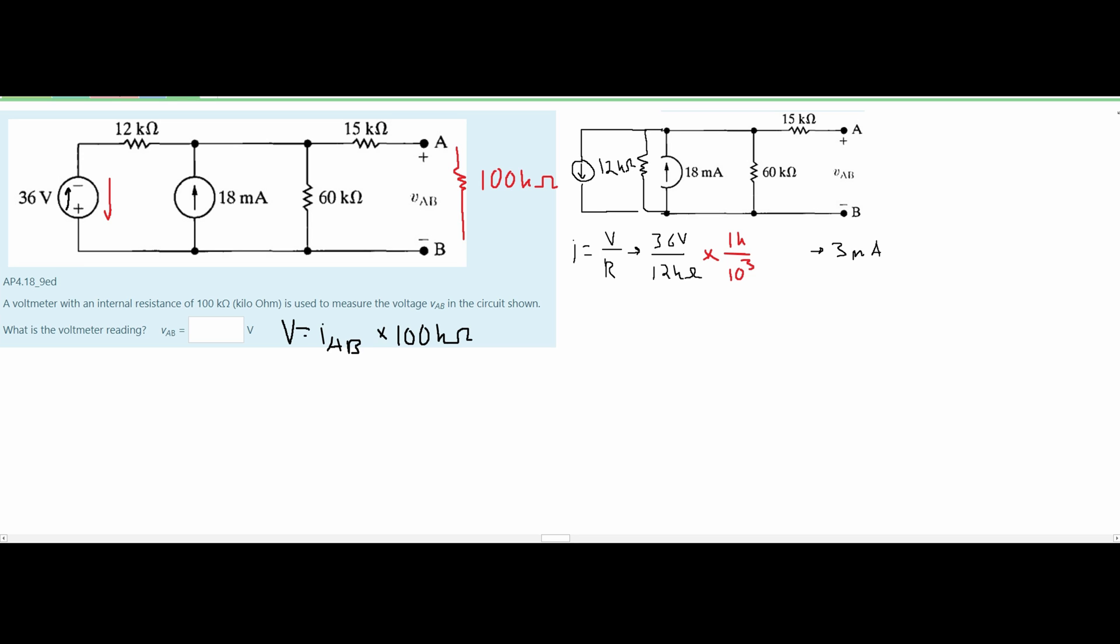When we do this math we can actually flip this 10 cubed up and it's going to be 10 negative cubed. And 10 negative cubed is equal to 1 milli and that's how we get 3 milliamps.